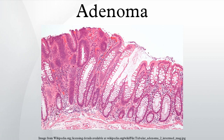Colon: adenomas of the colon, also called adenomatous polyps, are quite prevalent. They are found commonly at colonoscopy and are removed because of their tendency to become malignant and to lead to colon cancer.